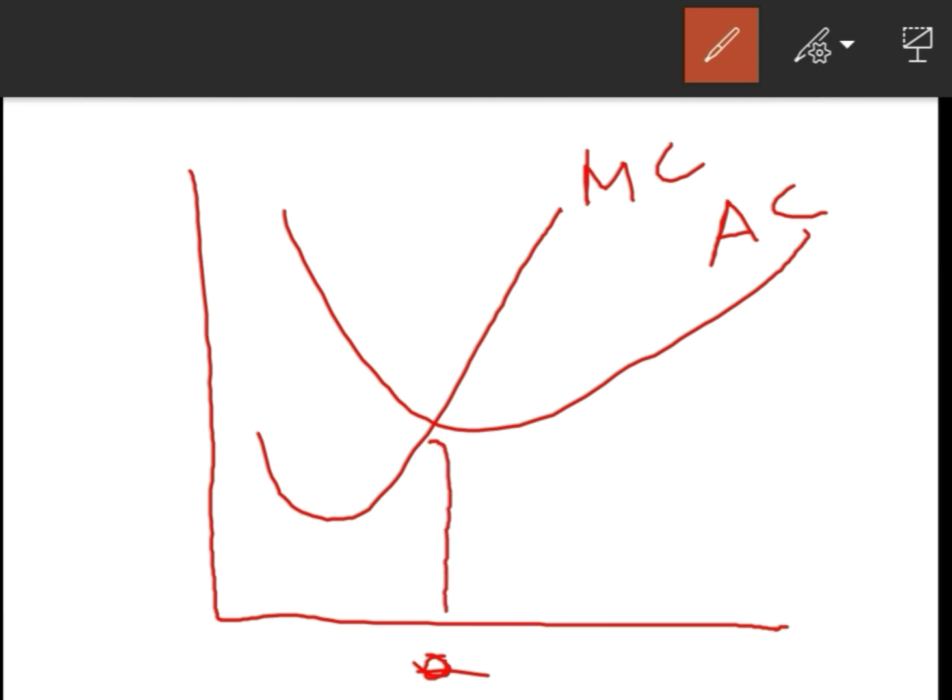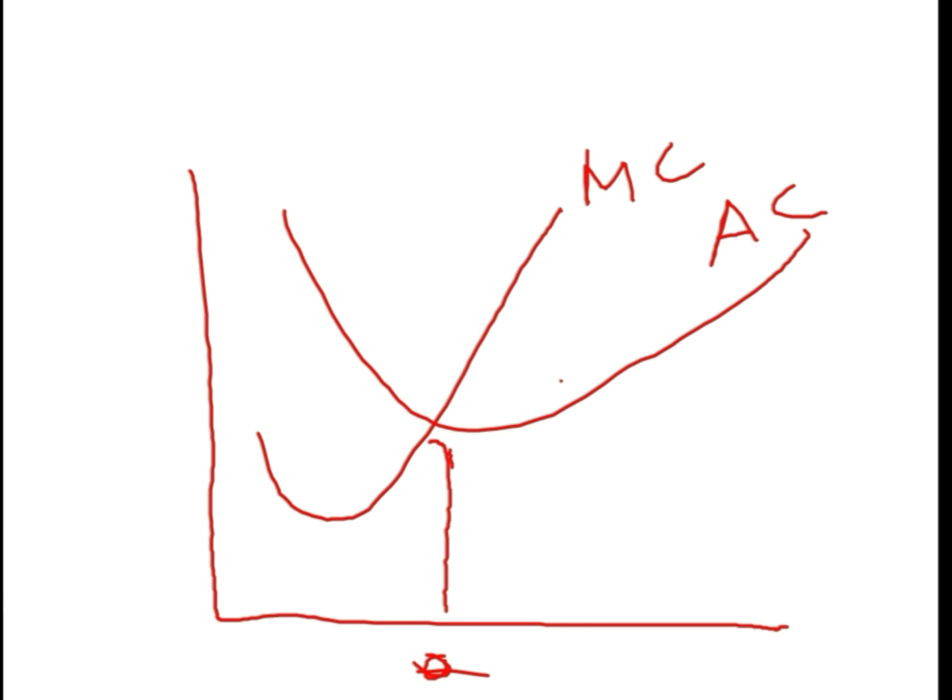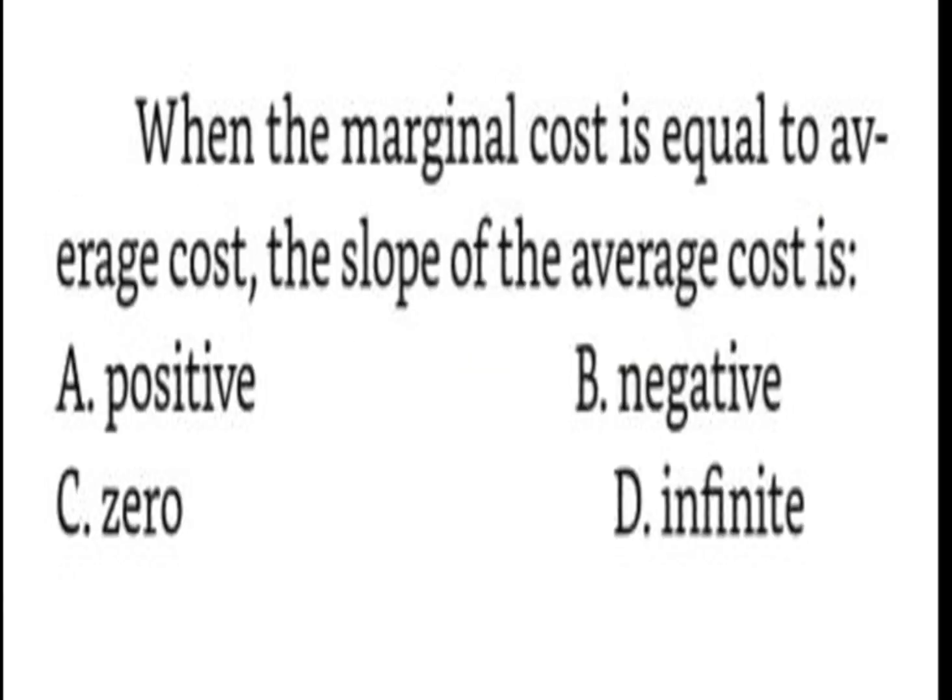The marginal cost curve cuts the average cost curve at its minimum point. So when marginal cost curve cuts the average cost curve at its minimum point, the slope of the average cost curve is zero. So the answer is zero.